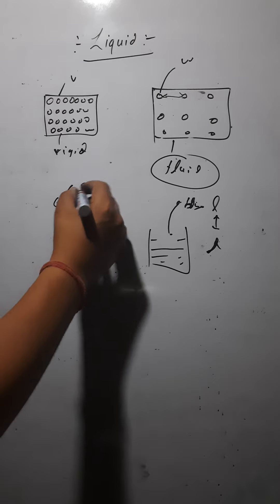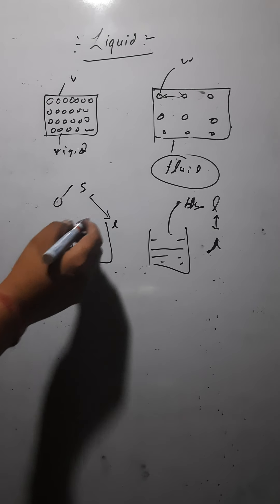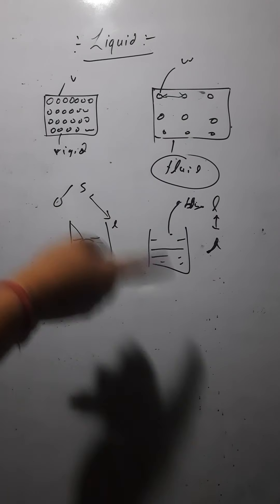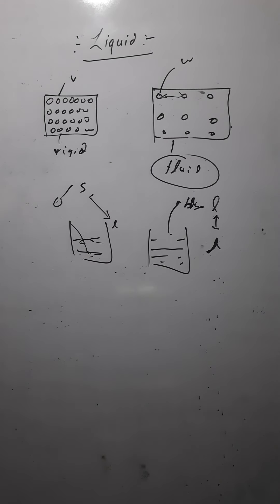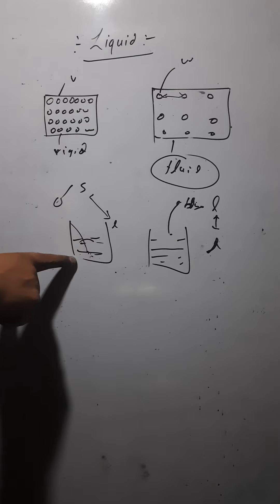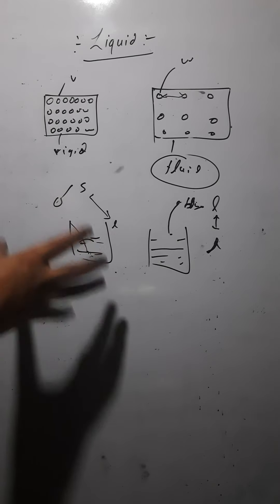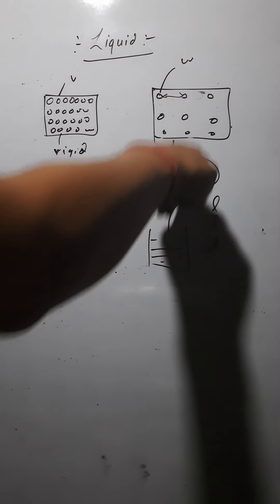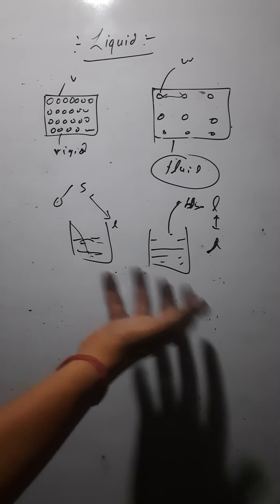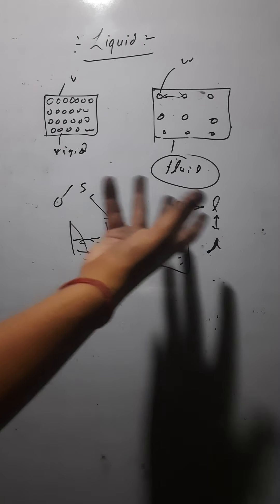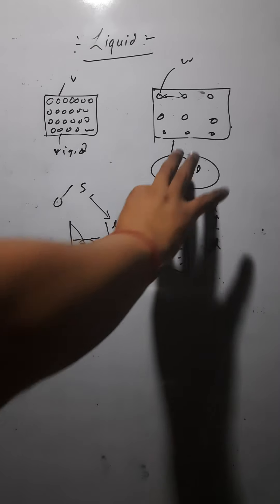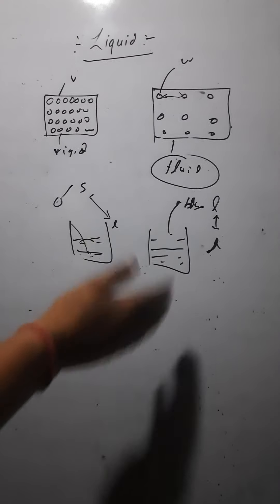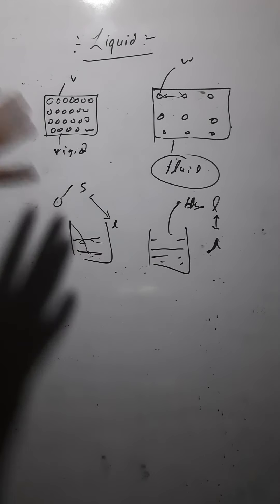Liquids and solids — one liquid and one solid — can also diffuse. But the rate of diffusion in case of liquid into liquid would be much faster than solid into liquid. Like if you just put a spoon of sugar or salt in water, it would take some time to be diffused. But if you put a drop of ink, suddenly the whole water would become blue. So the rate of diffusion of liquid and liquid is much faster than liquid and solid.